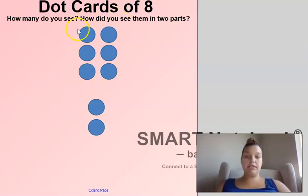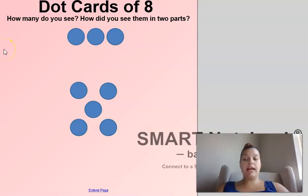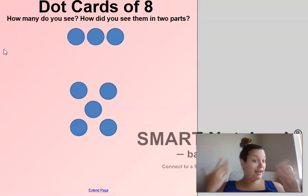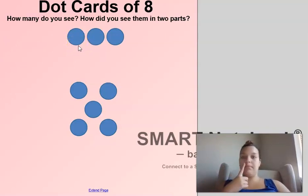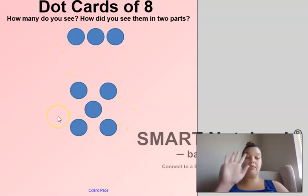My brain separated them into a top group and a bottom group. 1, 2, 3, 4, 5, 6, 7, 8. How many dots do you see here? 8 again. So I think our trend is that our number of the day is going to be 8 today. How did your brain separate them? My brain separated them into a top part and a bottom part. I saw 3 on top and 5 below. So I'm 5, 3, 5, 6, 7, 8. And I counted up quick.